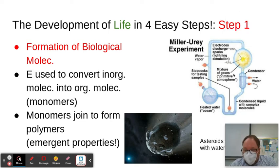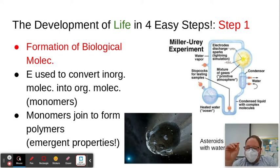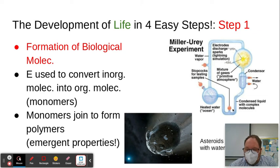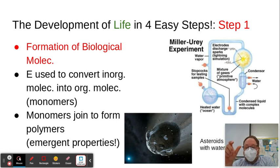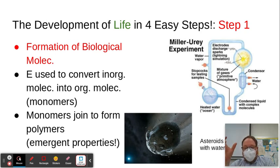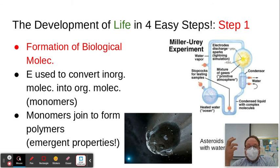In the Miller-Urey experiment — one you definitely need to know — they took gases they thought were present in Earth's early atmosphere: nitrogen, carbon dioxide, water. They exposed it to sparks from electrodes, which simulated energy in the environment to break and form chemical bonds. They collected the molecules created from those reactions and were able to extract some amino acids, uric acids — some of the monomers we associate with life. They didn't create life, but demonstrated you can use materials and energy present on early Earth to create these building blocks of life.